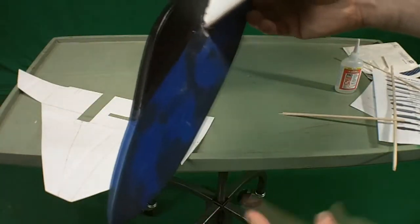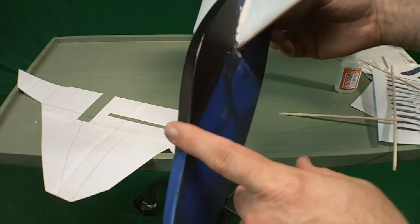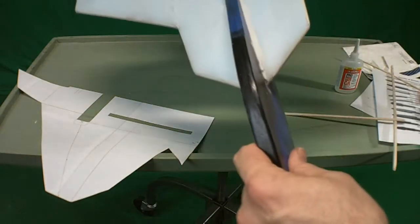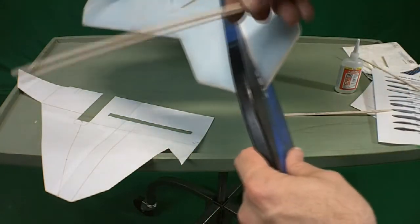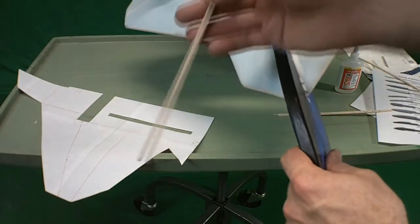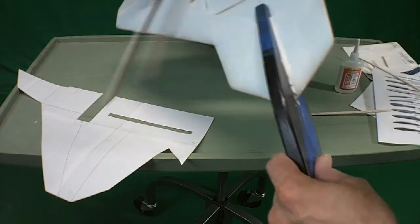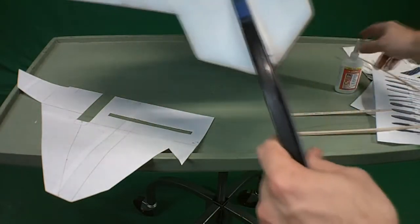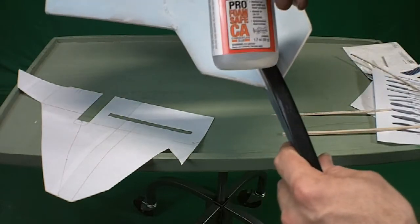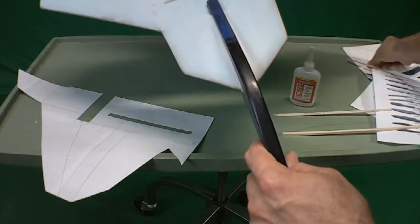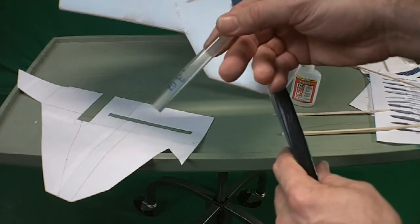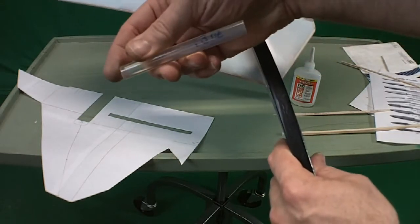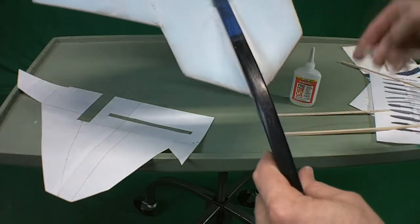This front nose section is three pieces of the blue core foam with the center section of that 3/16 inch square basswood. The whole thing is held with the foam safe instant glue. I didn't want to use hot glue. It's about three tenths of an ounce per stick and I just didn't want to go that route.